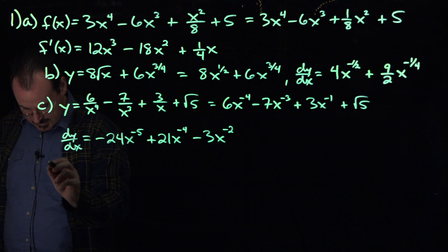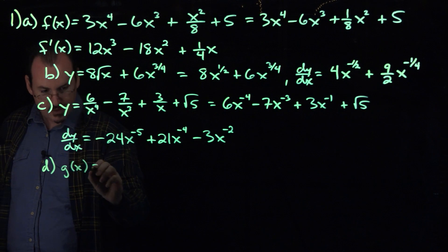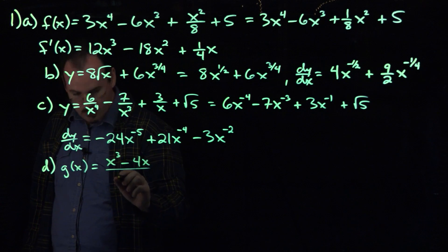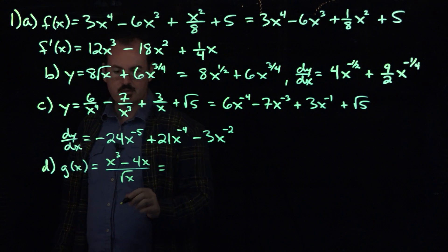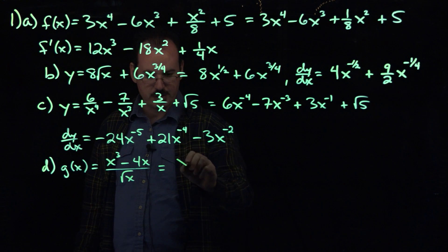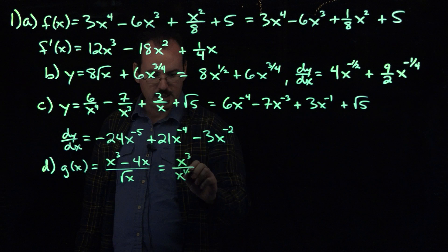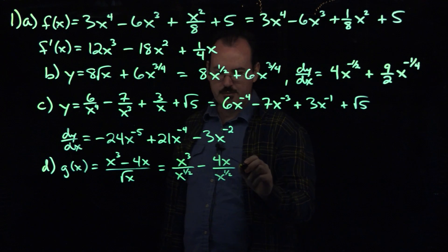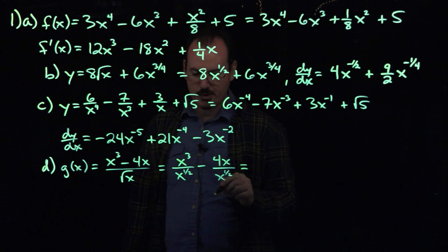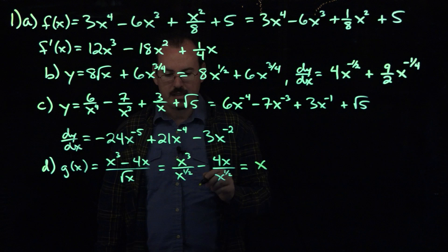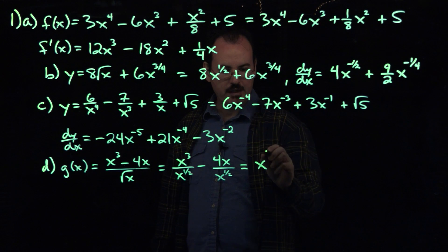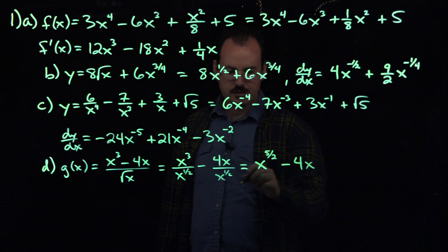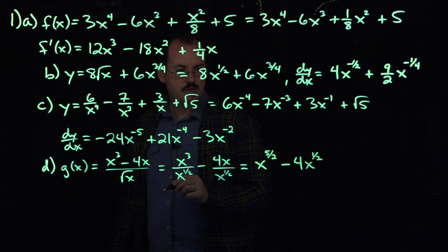Next one, part d: g of x equals x to the third minus 4x over root x. I'm going to combine a couple of steps here — first change that root to a power, then split that up as two different fractions. So we get x to the third over x to the 1/2 minus 4x over x to the 1/2. Using the properties of exponents, dividing means we subtract the powers, giving us x to the 5/2, minus 4x to the 1/2.